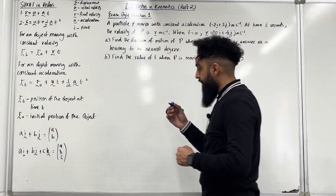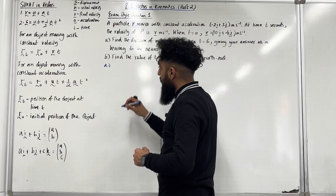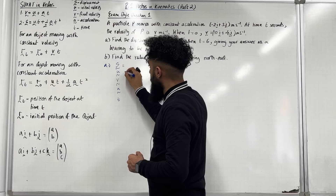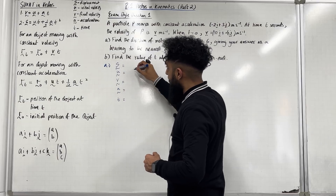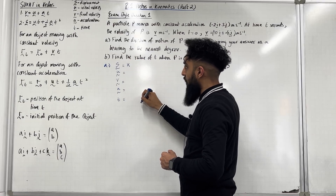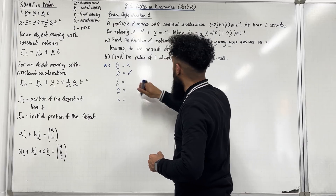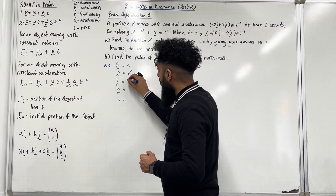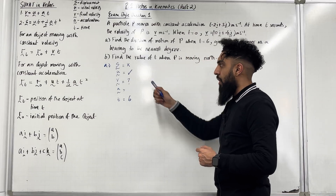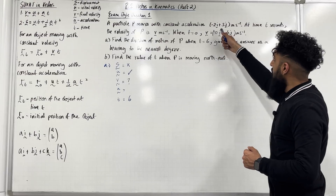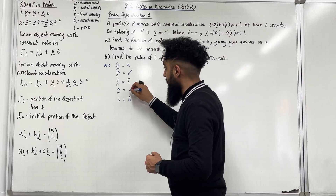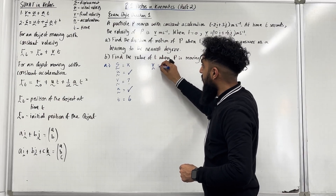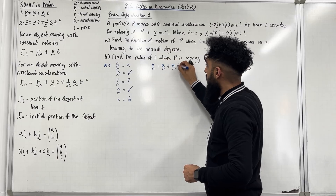Let's start with part A. Writing out SUVAT: the displacement vector is not given. The initial velocity vector U is (10i + 4j) m/s. The final velocity when T = 6 is what we're trying to calculate. The acceleration vector A is (−2i + 3j) m/s². To find the velocity when T = 6, we use V = U + AT.